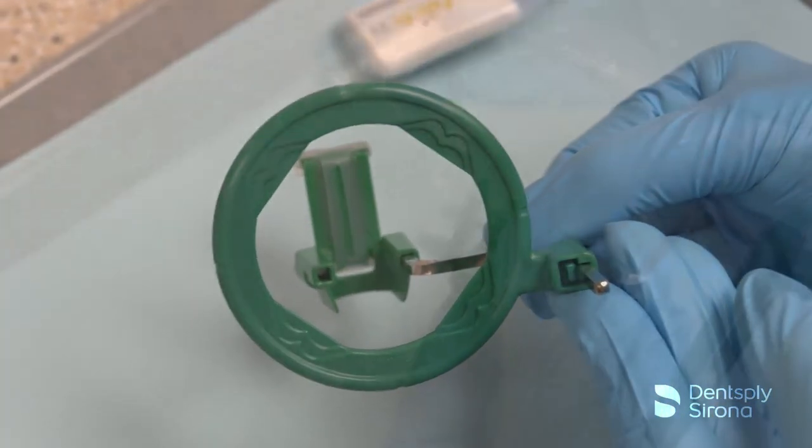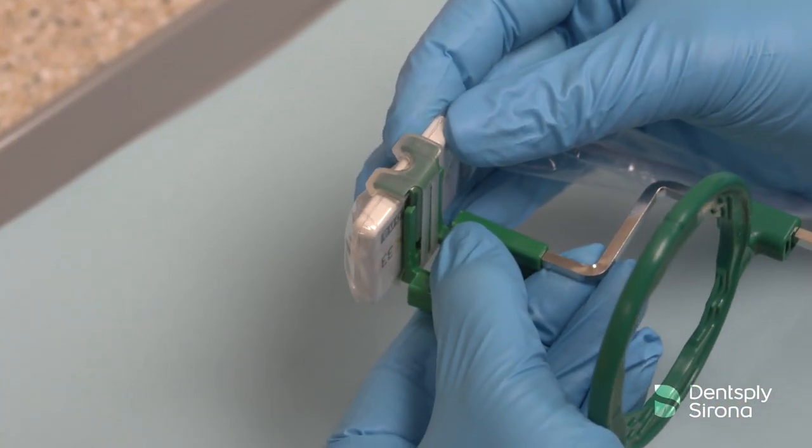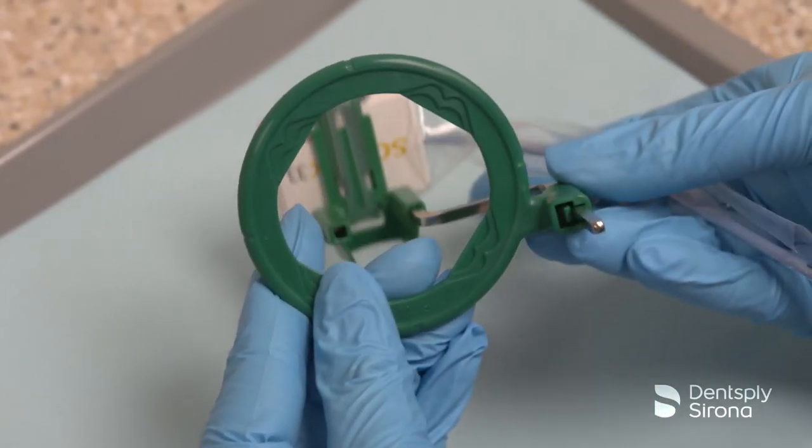After placing the sensor into a RIN digital sensor cover, securely insert the sensor horizontally into the green bite block, making sure the active side of the sensor is against the flat surface of the bite block.